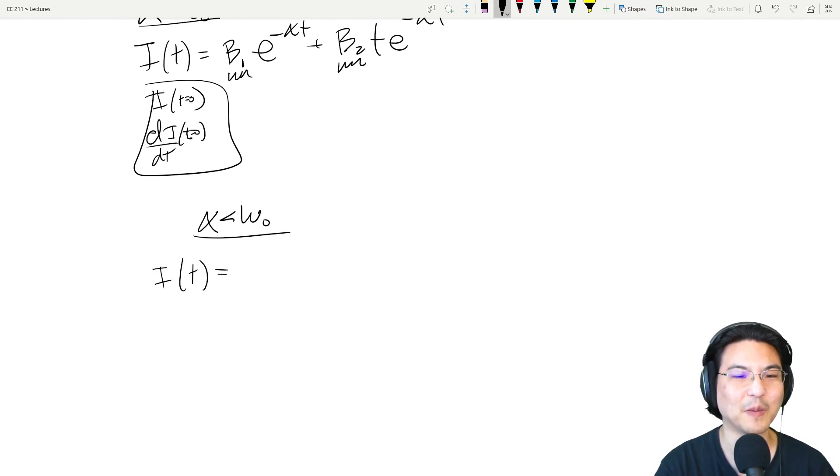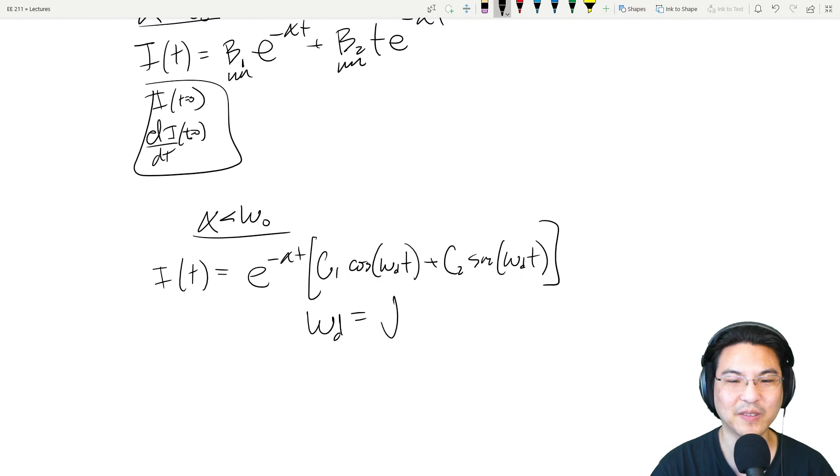And then if alpha is less than omega, this would be underdamped. So then the current would look something like this. Where omega d is the damped natural frequency, which is like this. Right? And then again, you have two unknown coefficients, use the two initial conditions to create two equations, solve for those two unknowns. Just like for a parallel RLC. Right? It's analogous.